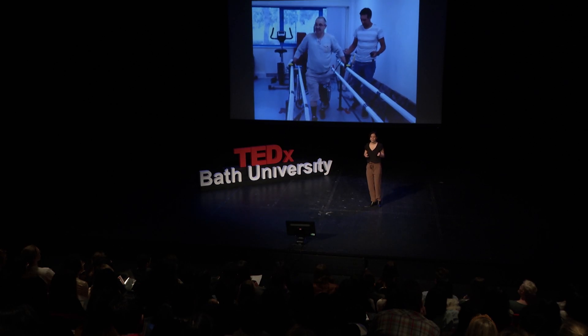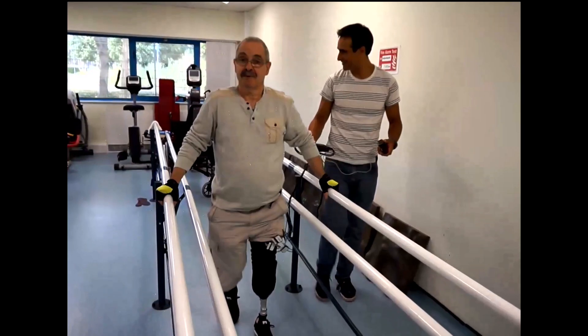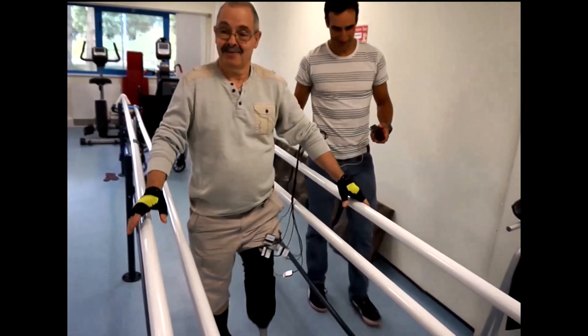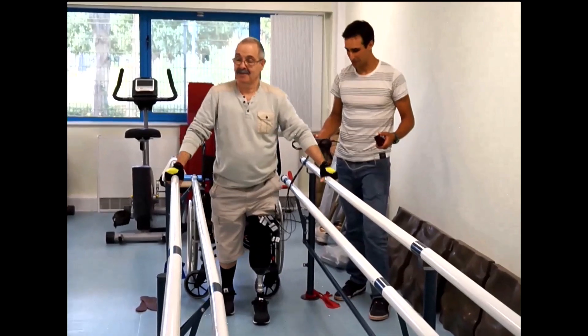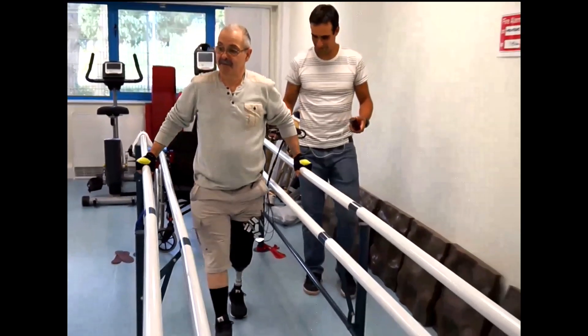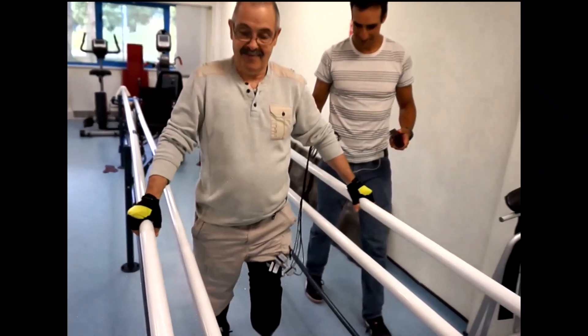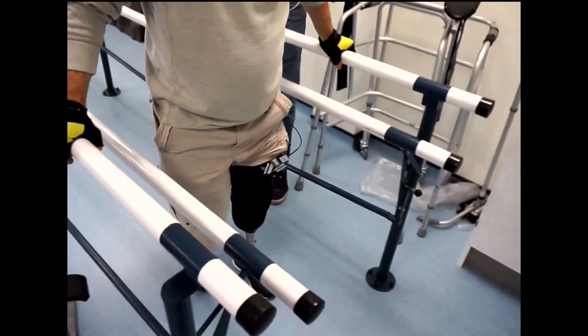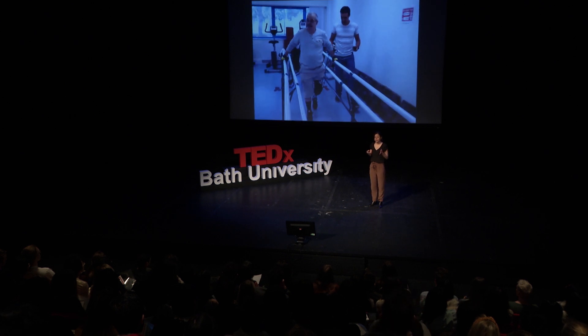This is John, one of the first amputees who took part in my research study. This is John walking with one of his first prostheses, one of his first artificial legs. I decided to monitor John's stump for nine months after the amputation using the 3D scanner.